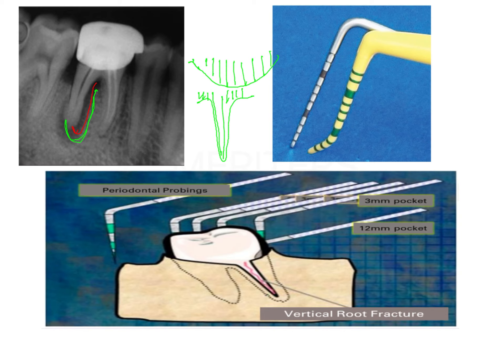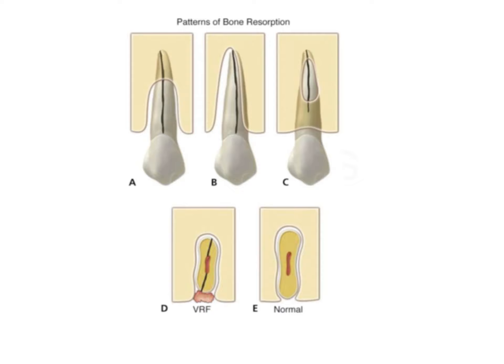The J-shaped radiolucency indicates bone loss around the vertical root fracture. The patterns of bone loss can follow the sulcus as a very deep and narrow defect, or appear as a J-shaped radiolucency. It can also present as a dehiscence — bone loss on the buccal or palatal plate only in the region of the fracture.